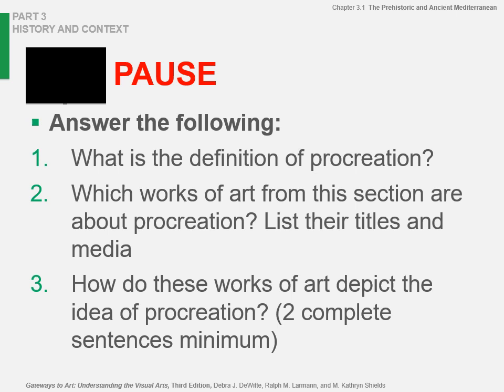The textbook is not dead — you still need it. Number three: how do these works of art depict the idea of procreation? Answer in two complete sentences minimum. You're basically going to tell me about the works you identified in number two and tell me what the ideas about procreation are that are visible in those works of art. Be sure to save your progress because you are going to have to turn this in by the end of the week into D2L for a grade.